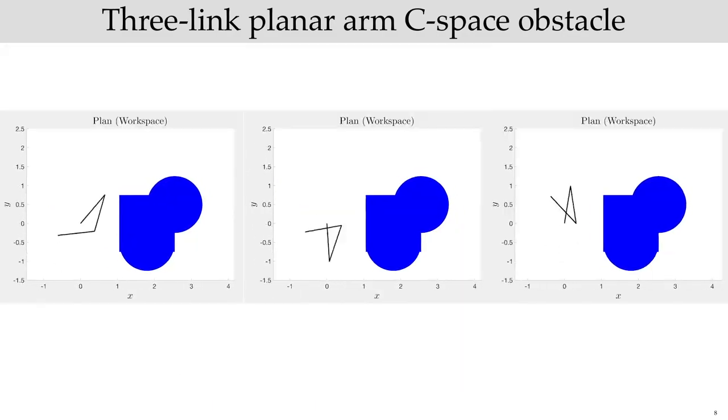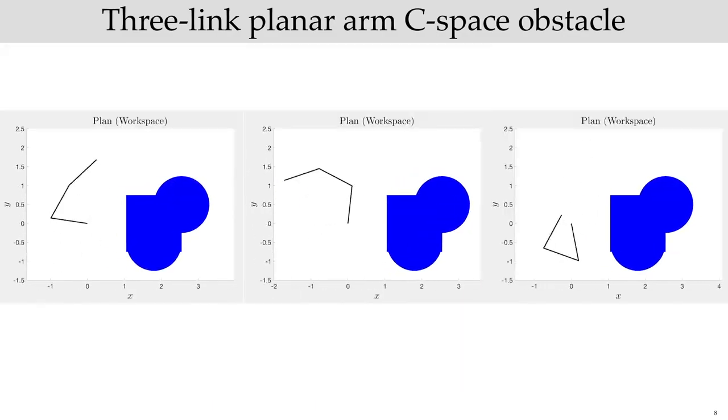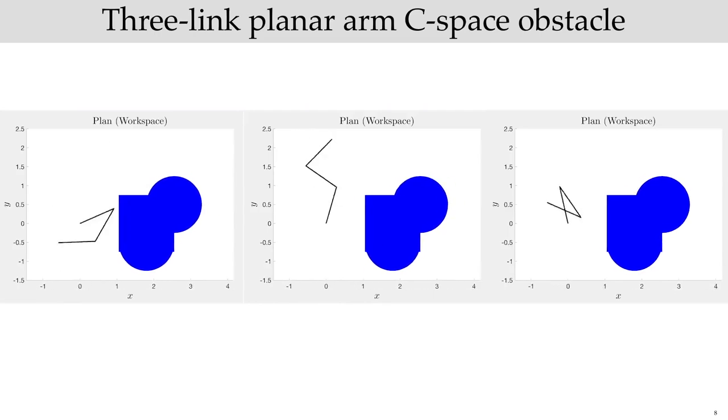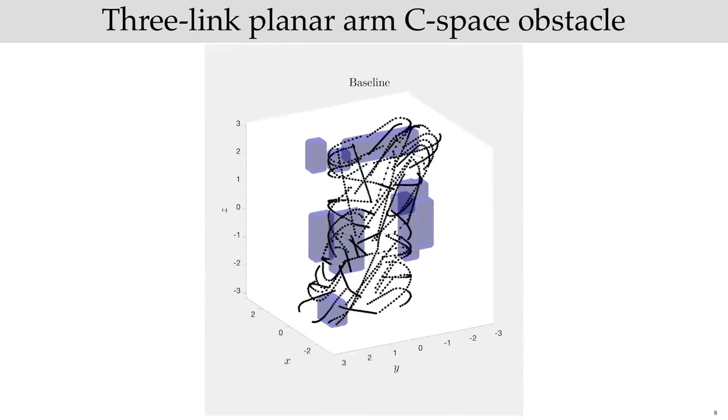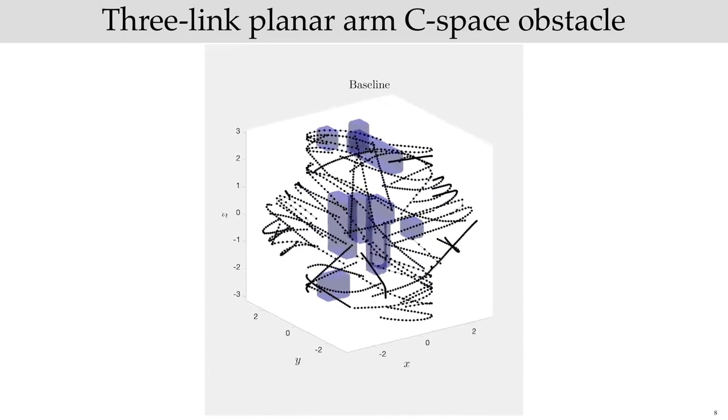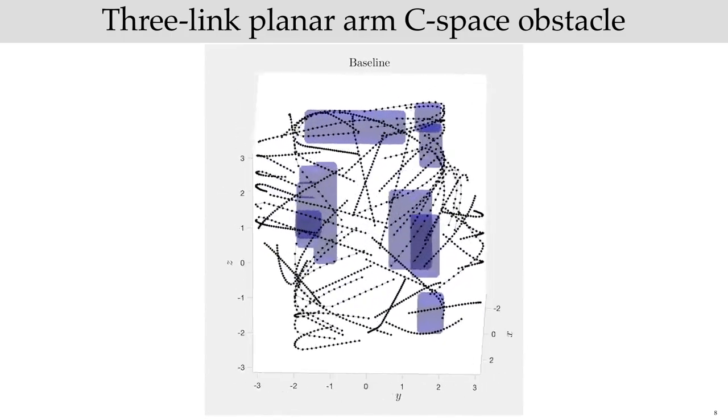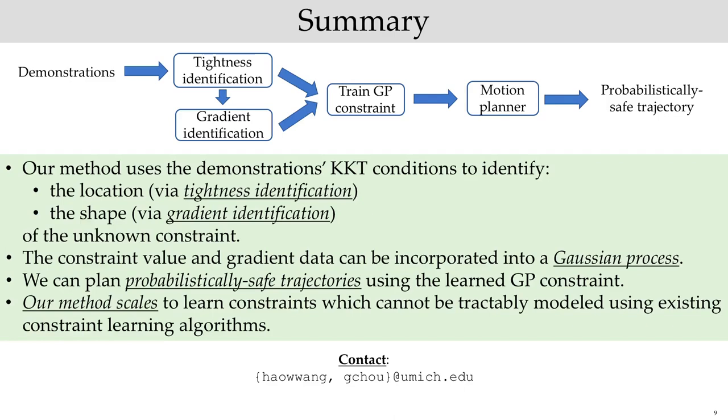In planning with the learned constraint with safety probability at least 0.9, we are able to generate plans which are safe in practice for the true constraint. And again, baseline constraint learning methods, which represent the constraint as a union of boxes, fail to accurately recover the constraint due to poor computational scaling. We conclude with a summary of our work. Thanks for your attention!